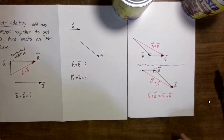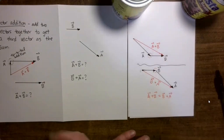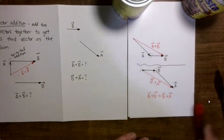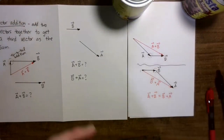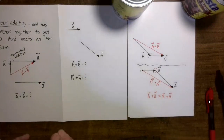So now we have been introduced to scalar multiplication and vector addition — both operations on vectors that can be represented using graphical methods. We will learn the computational methods later. In the next video, we will show how subtraction of two vectors can be represented graphically.